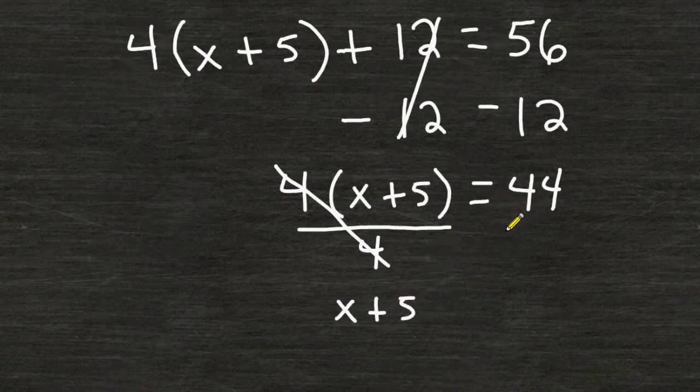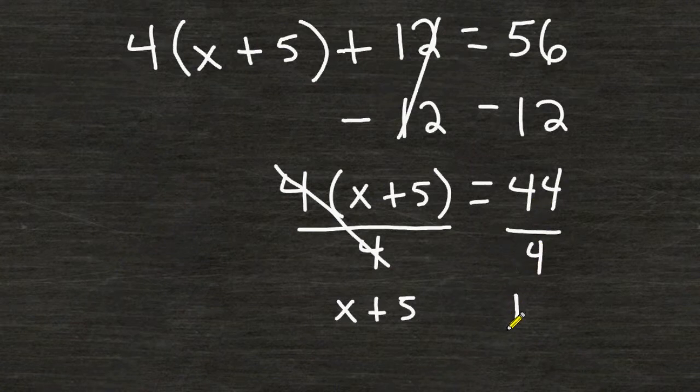On the other side of the equation, we also have to divide by 4 in order to balance our equation. 44 divided by 4 is equal to 11, and we have to remember to bring down our equal sign.